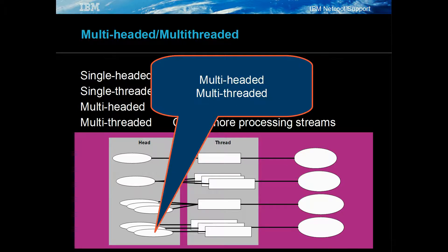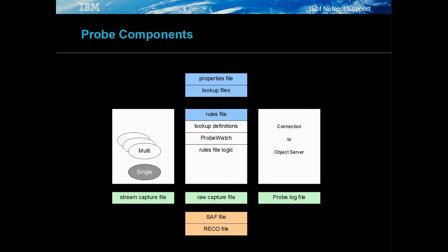Multi-headed, multi-threaded probes read events from multiple heads and process these events in parallel. This can improve the probe's performance significantly, where one or more of the heads read significantly more events than the others.